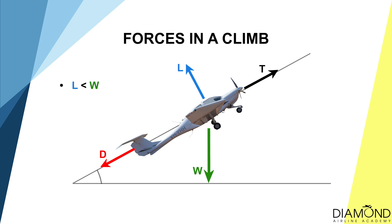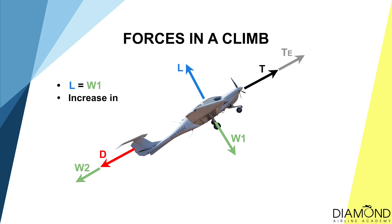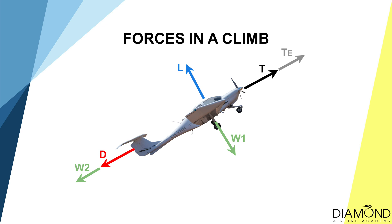We can also split weight into two portions. Weight 1 follows the vertical axis of the aircraft. Weight 2 goes from the tip of weight 1 to the weight line and is acting backward, parallel to the drag line. We can reposition weight 2 to be behind the drag line, and you can see that lift and weight 1 are equal. During a climb, we change our power setting to full power, so from normal cruise thrust we now have more thrust — we call the additional thrust excess thrust. Looking at the diagram as a whole, total thrust equals drag plus weight 2, and lift equals weight 1. In conclusion, there will be no net forces — just like straight and level. We call this state equilibrium.